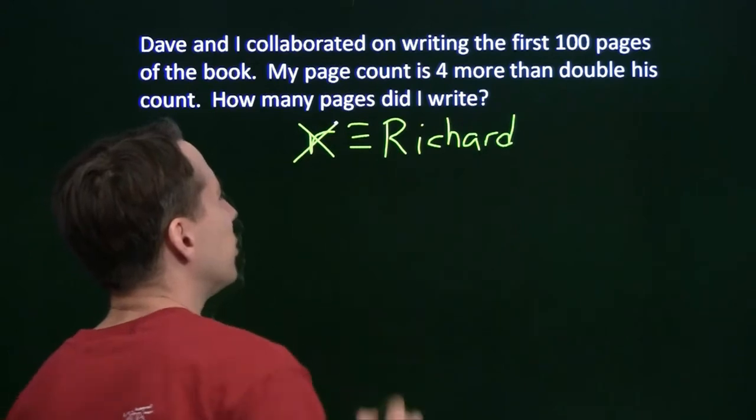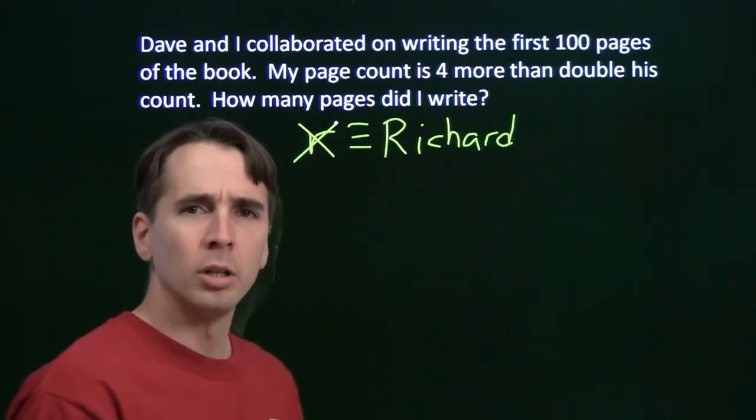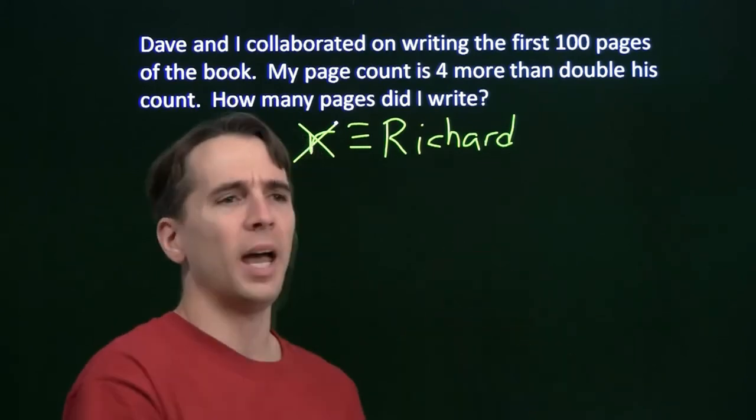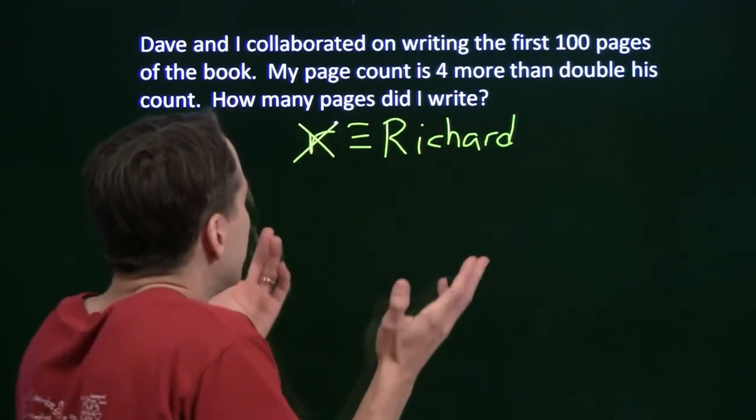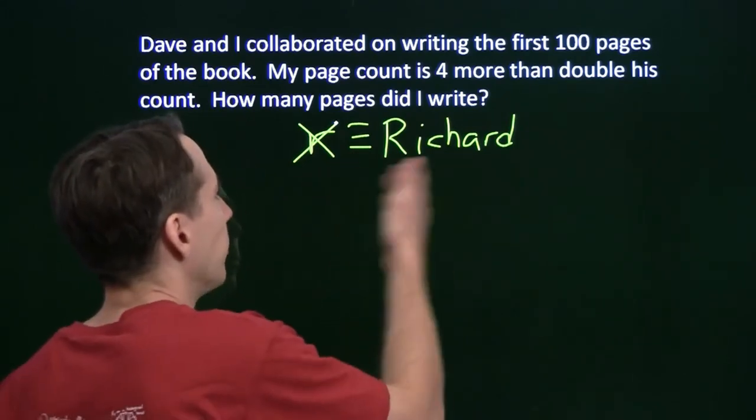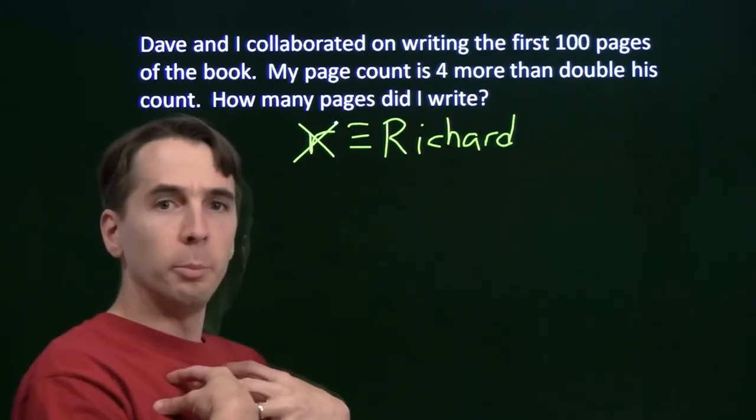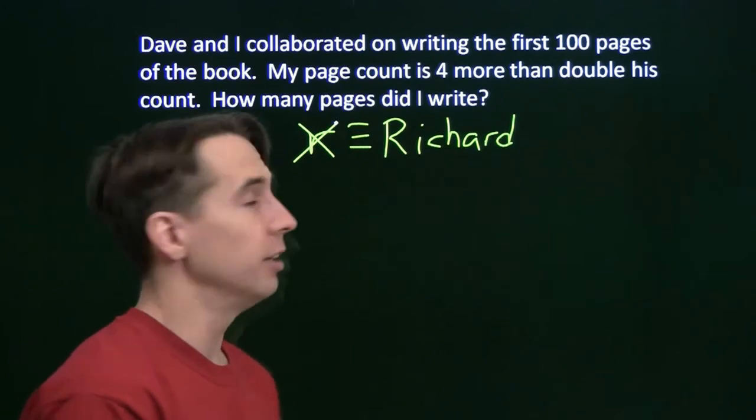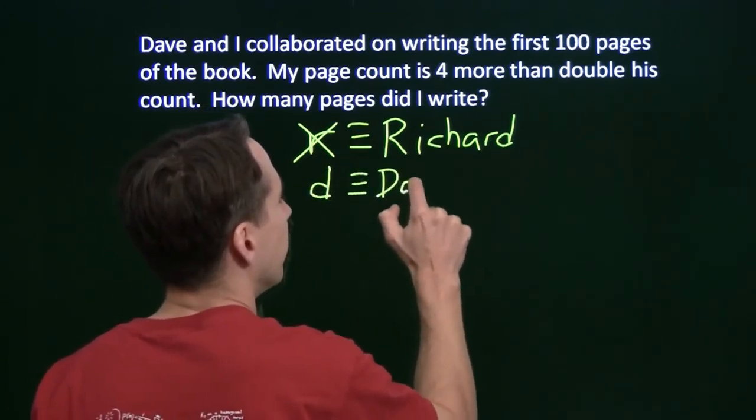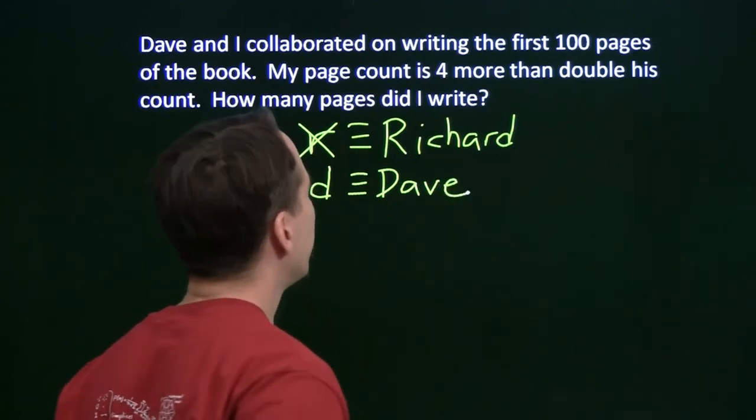Well, sometimes, if the first choice of variable doesn't work, try something else. If you get stuck going down one path, try another path. Don't just sit there and stare. What else could we assign a variable to here? We couldn't get anywhere with assigning a variable to me. Let's assign a variable to Dave. We'll have d, and that'll be Dave.